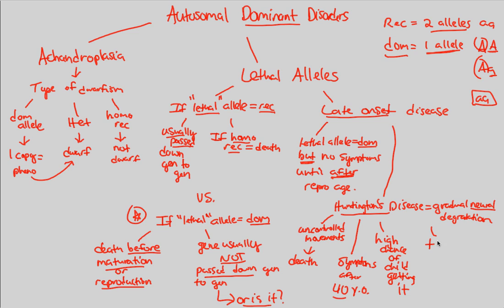On a positive note, there is a very good genetic test available to check for Huntington's disease, because it's critical to understand our own genetics — what we're susceptible to, and what our children are susceptible to. We can't tell until after 40 from symptoms alone, and oftentimes after 40 it's too late — you've already had kids, and those kids have a high chance of having this late-onset disease as well. That covers our autosomal dominant disorder story, and we'll continue human genetics by looking at chromosome number in the next video.